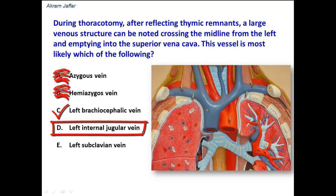What about the left internal jugular vein? As stated, the left internal jugular vein joins the left subclavian to form the left brachiocephalic, and it is the left brachiocephalic that empties into the superior vena cava — not the left internal jugular.